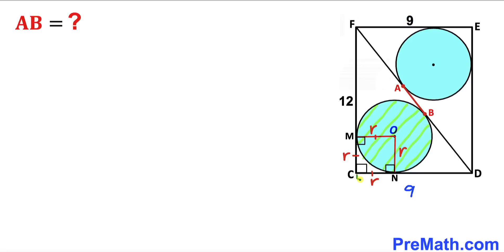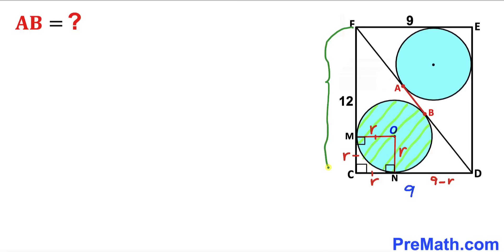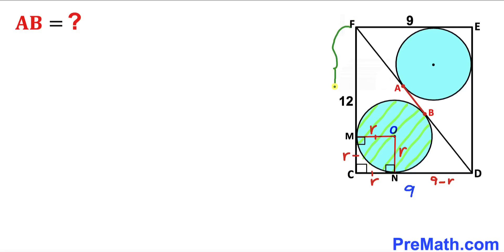Since this side length is lowercase r, this remaining side length is 9 minus r. Similarly, focusing on the other side: we know it is 12 units, and CM is lowercase r, so length FM is 12 minus r.